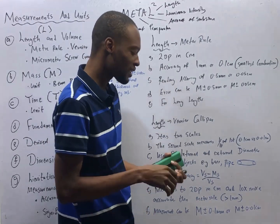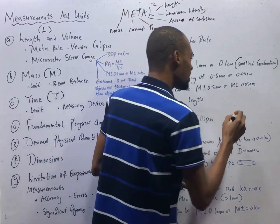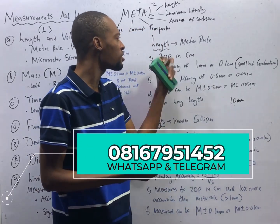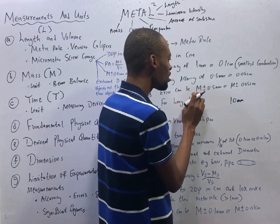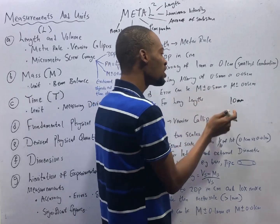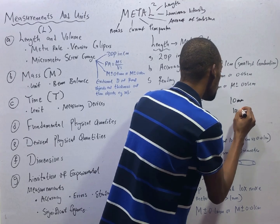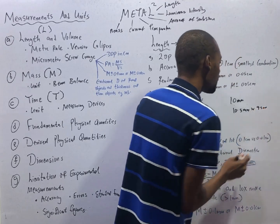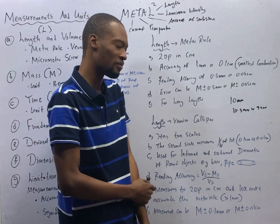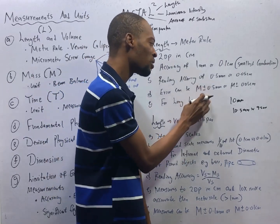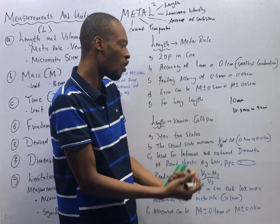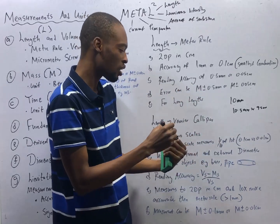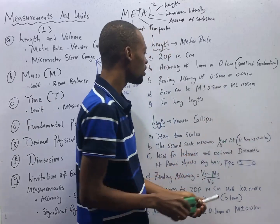This is what reading accuracy means: if I give you something to measure and that thing is 10 millimeters, when you measure it using a meter rule you will get the measurement plus or minus 0.5 millimeter — which means 10.5 millimeter or 9.5 millimeter. Either there is an addition of 0.5 millimeter error or it is reduced by 0.5 millimeter. That is the range of errors with a meter rule. A meter rule is used for long lengths.